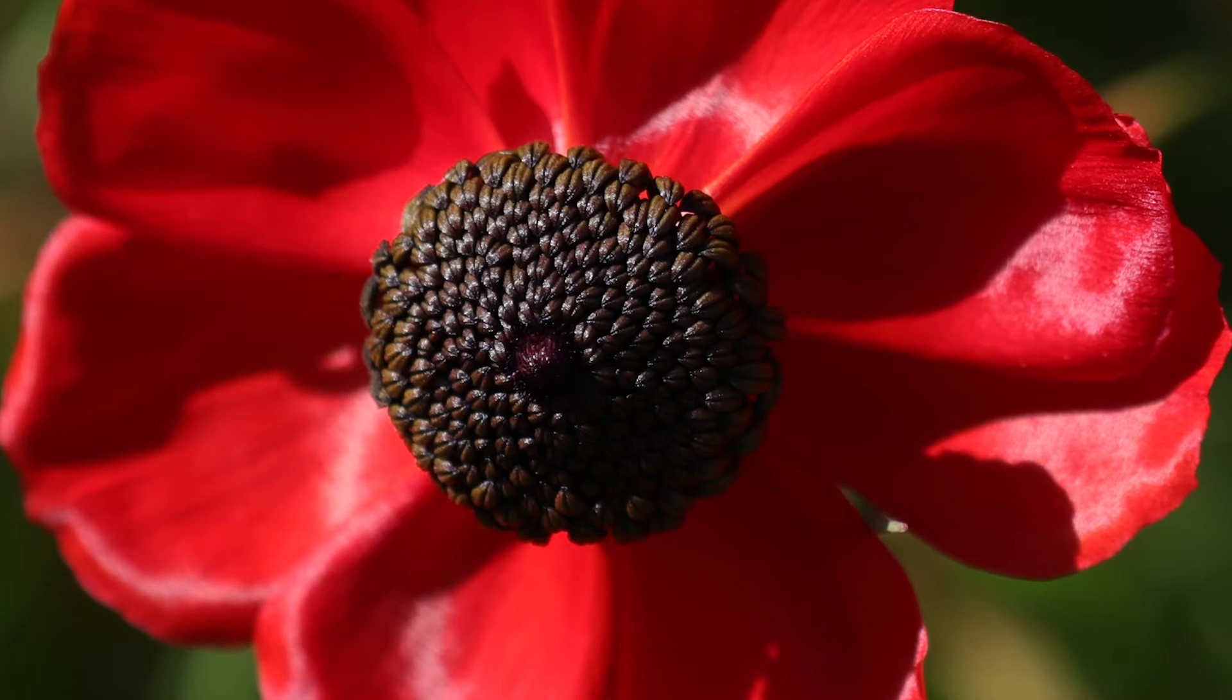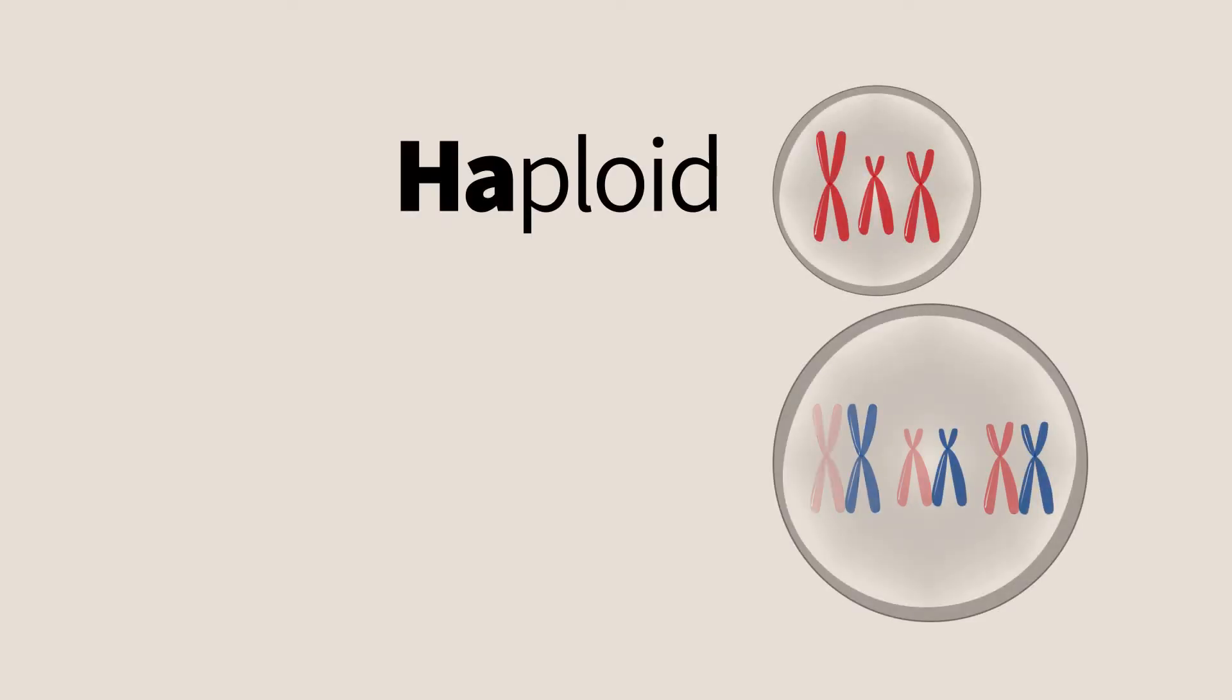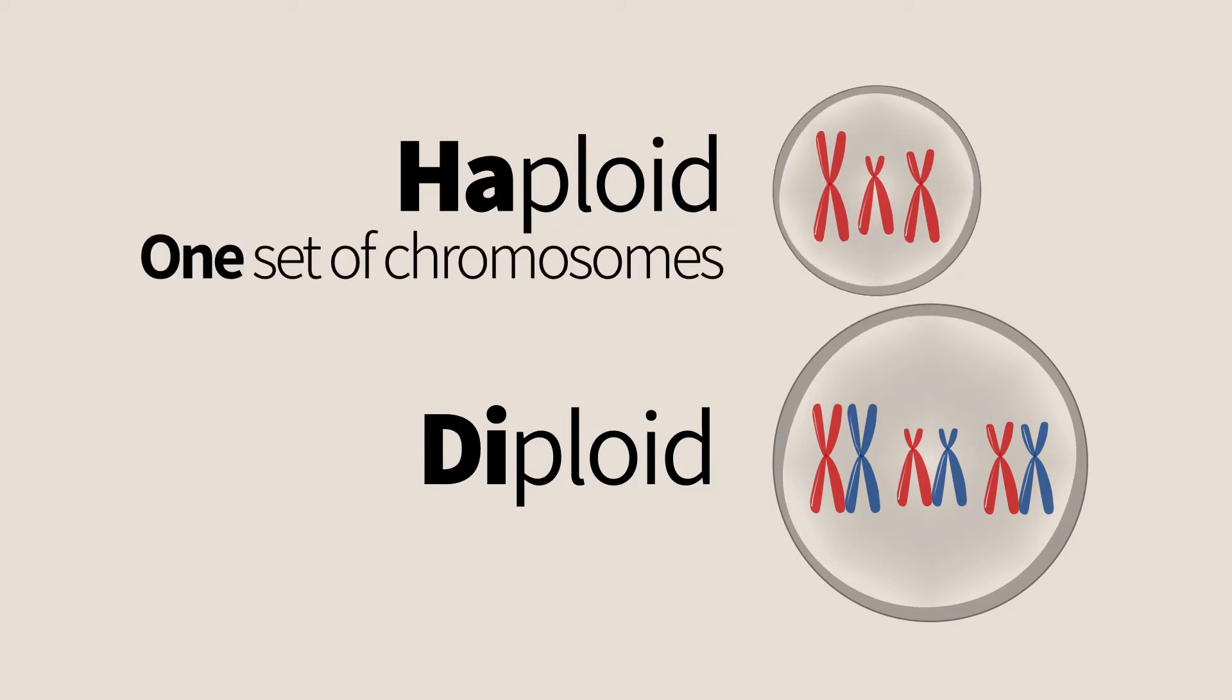Fertilization in plants is much more complex than in animals. We will first review the terms haploid and diploid we learned in the previous chapters. A haploid cell has one set of chromosomes and a diploid cell has two sets, one from each parent.